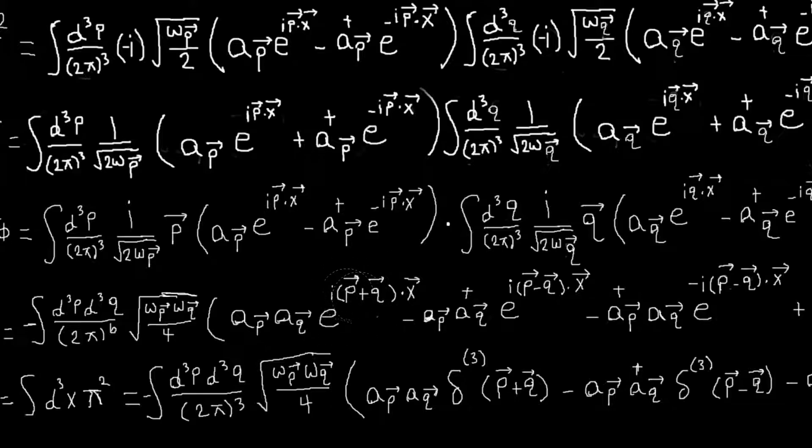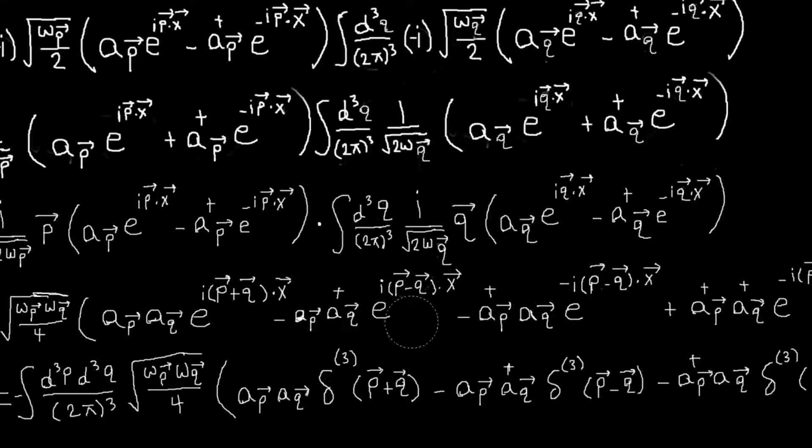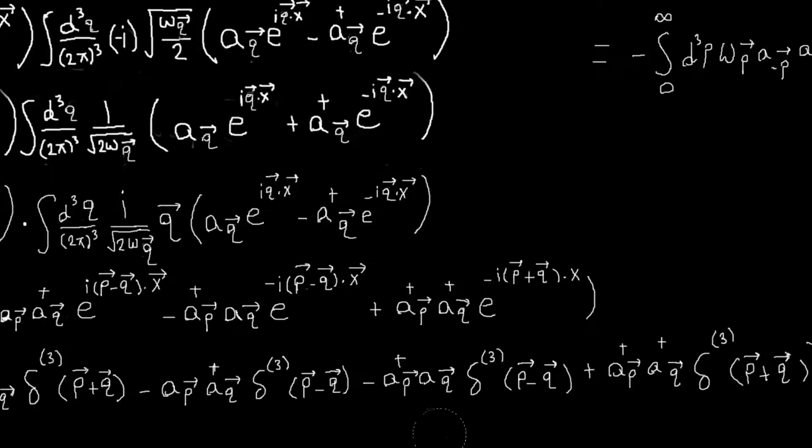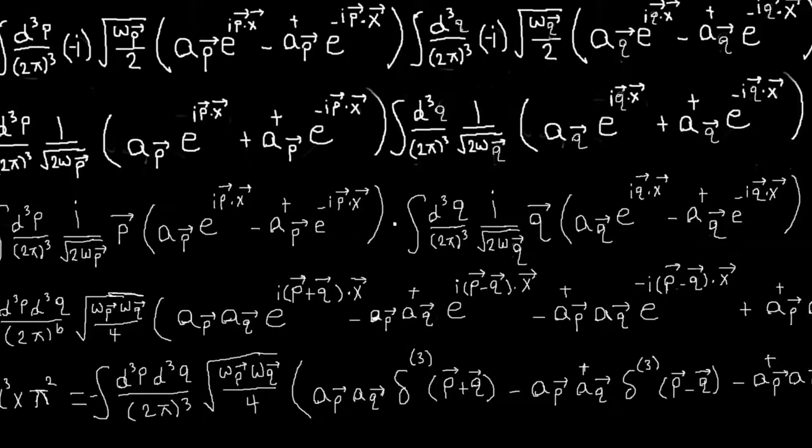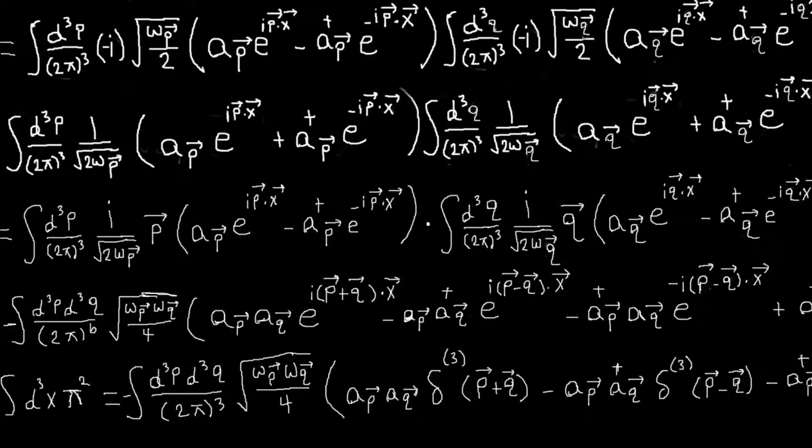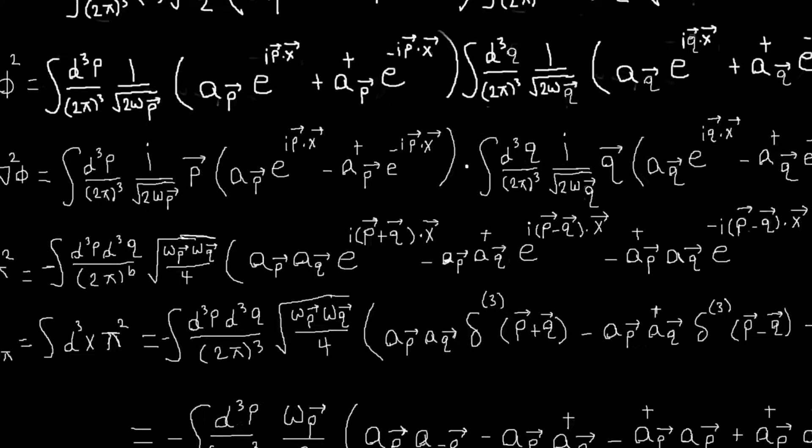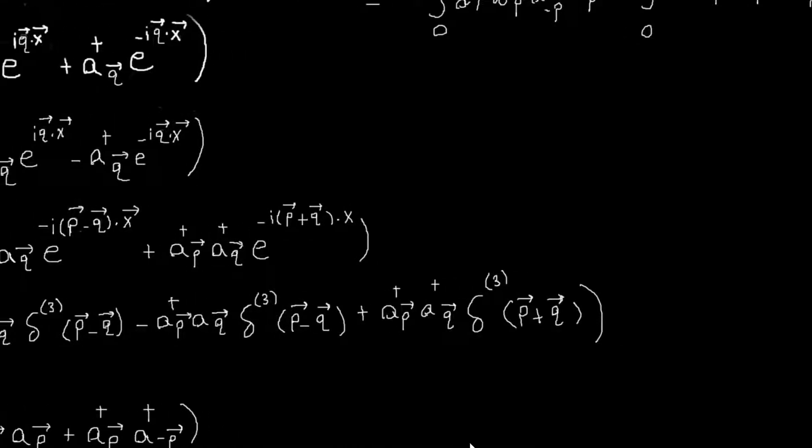So this will give us a delta p plus q, and this will give us a delta p minus q, delta p minus q, p minus q, delta p plus q. So we can just do that integral over all space and that will reduce this expression to this. So already things are looking much nicer.